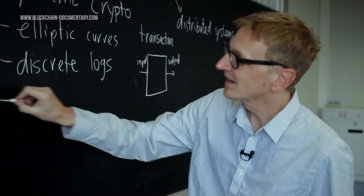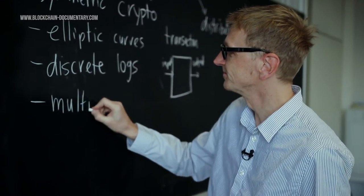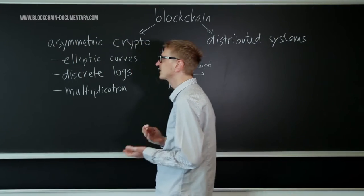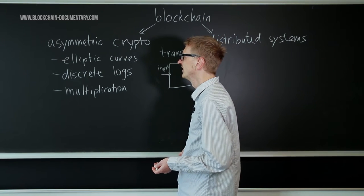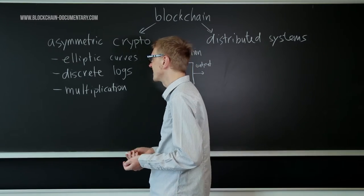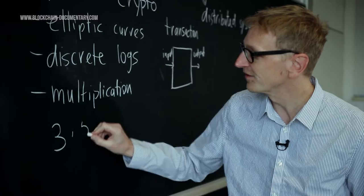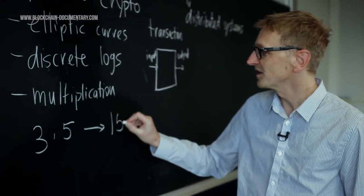So instead what I'm going to use here is just multiplication, which is the simplest concept which already has some of the features that these concepts have. So multiplication is nothing else, nothing you don't know from primary school. Basically you have two numbers, something like three times five, and you multiply them to the product to fifteen.